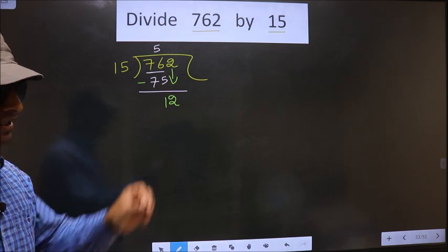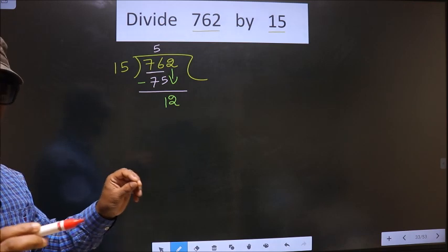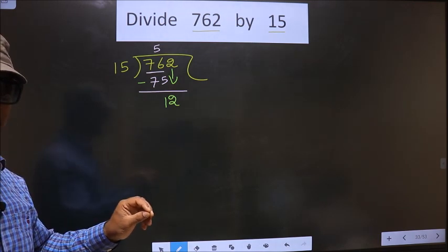I repeat: bringing the number down and putting a dot and taking zero, both at the same step, you are not supposed to do, which is wrong.